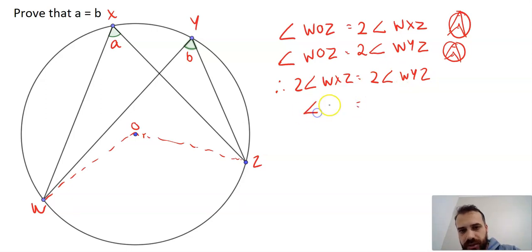Therefore angle WXZ equals angle WYZ. And in this particular case, we were supposed to prove that A equals B. Therefore A equals B, QED.